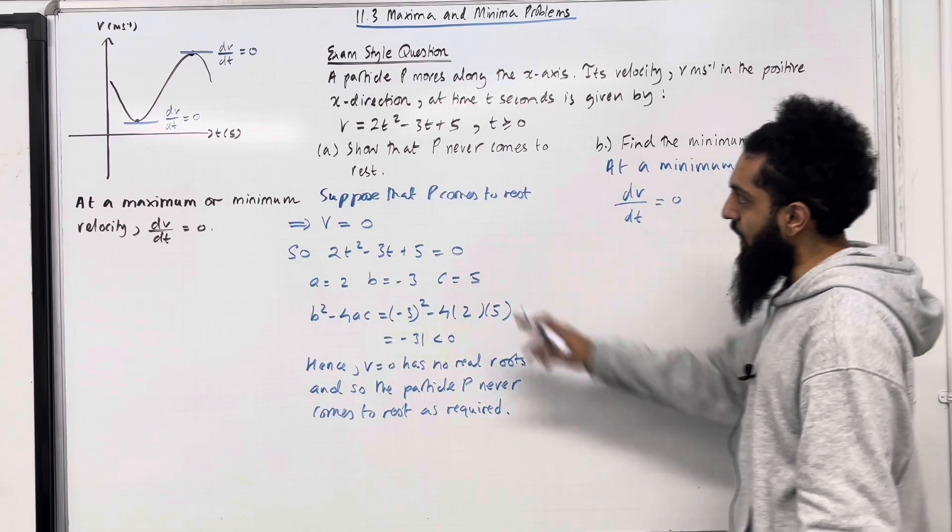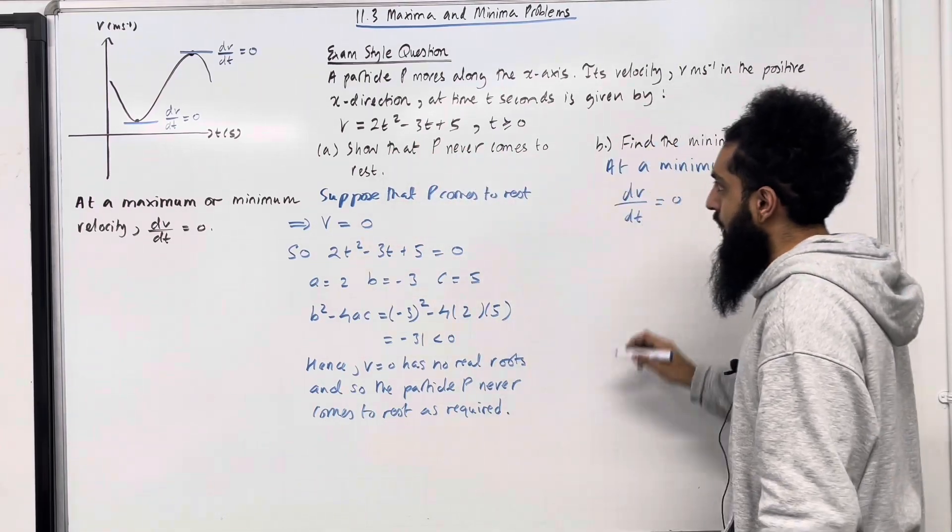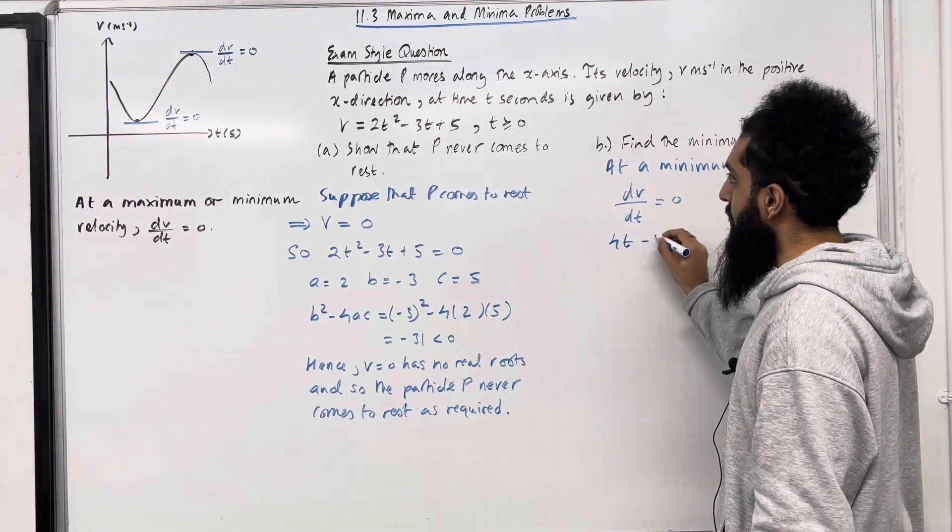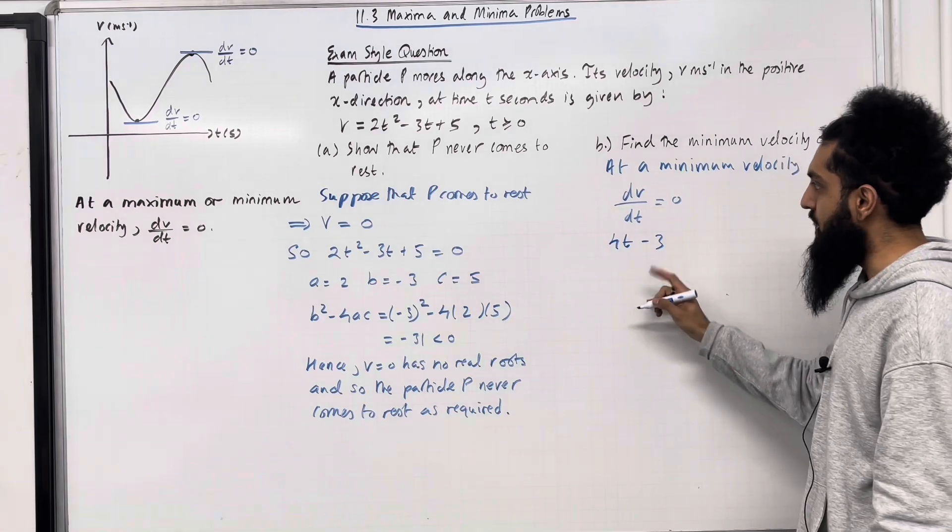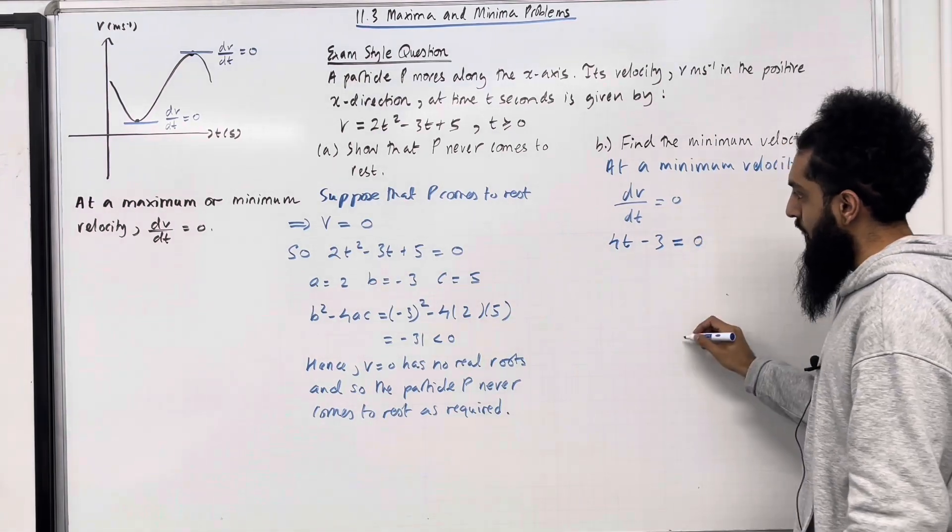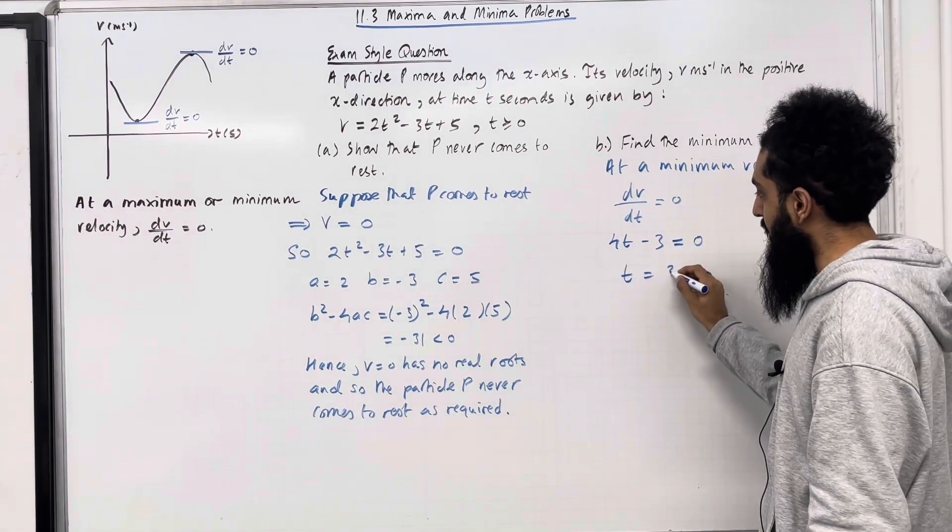So if we differentiate the velocity term by term, we get 4t - 3. So that is your dv/dt has to equal 0. Solving this gives us t = 3/4.